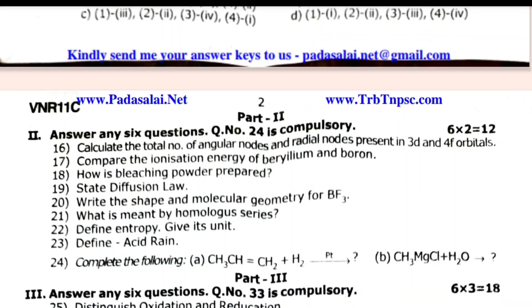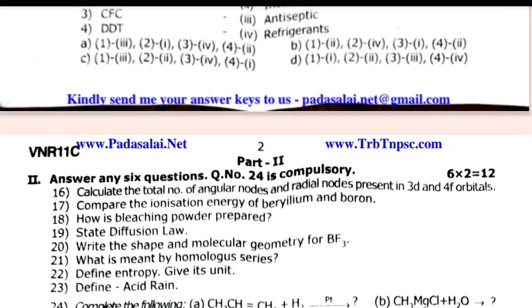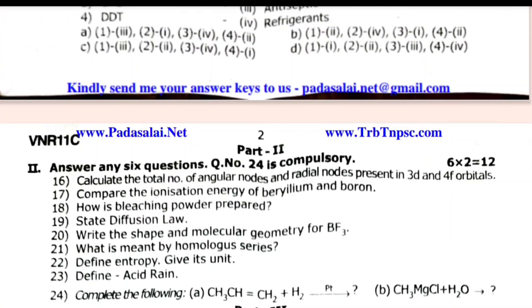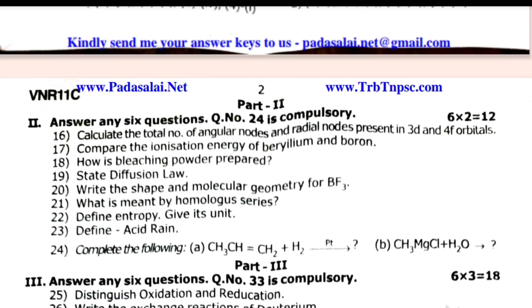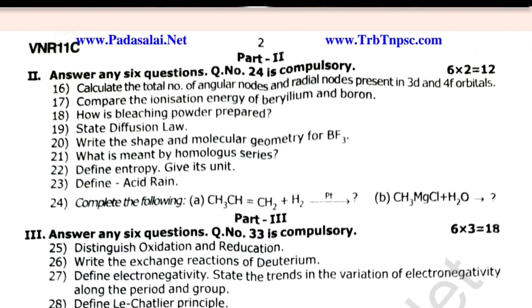Next part 3, 6 into 3 equals 18. Question 33 is compulsory. Distinguish between oxidation and reduction. Write the exchange reactions of deuterium. Define electronegativity. Define Le-Chatelier principle. Explain the formation of H2 molecule using MO theory. Explain geometrical isomerism of 2-butene. Give the structure and uses of DDT.